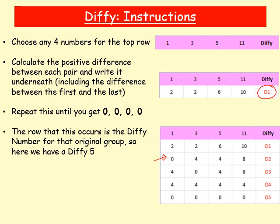The row where you get all zeros — which we've got down here — this is the Diffy number for that group. So here we have a Diffy of 5. D5 means Diffy of 5, so we've had to go through that process five times before we ended up with all zeros at the end.